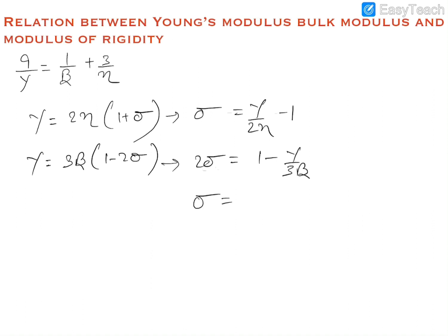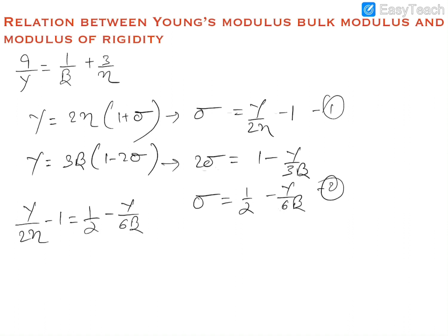So sigma from the second equation will be equal to 1/2 minus gamma divided by 6 beta. We can now equate these two expressions: gamma divided by 2 eta minus 1 equals 1/2 minus gamma divided by 6 beta. Rearranging these terms, gamma into (1 divided by 2 eta plus 1 divided by 6 beta) is equal to 3/2.